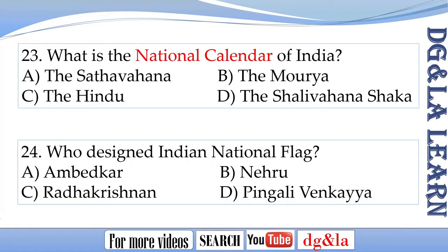Question 23: What is the national calendar of India? The options are A. The Satavahana, B. The Maurya, C. The Hindu, D. The Shalivahana Shaka.